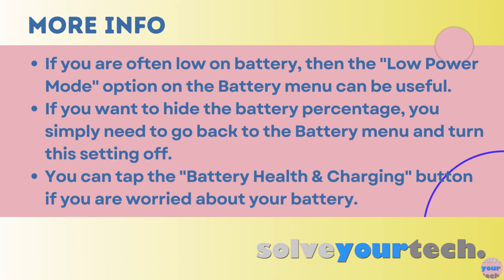If you're concerned that there might be something wrong with your battery, you can tap the battery health and charging button on the battery menu. There you can see information about the iPhone's current maximum capacity as well as its performance capability.